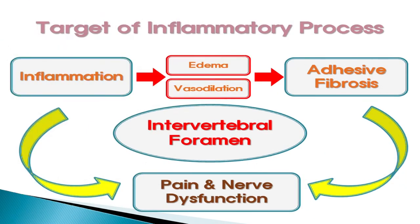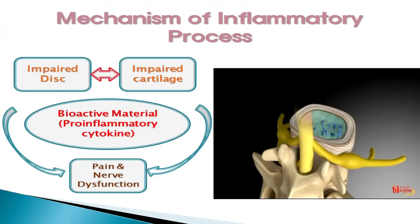This is the target of the inflammatory process. Inflammation causes edema, vasodilation, and adhesive fibrosis, which result in pain and nerve dysfunction in the vertebral foramen. This is the mechanism of the inflammatory process. Impaired disc and impaired cartilage cause pain and nerve dysfunction through bioactive material, which is the pro-inflammatory cytokine.